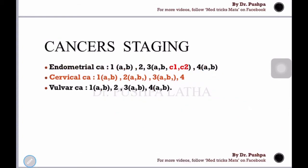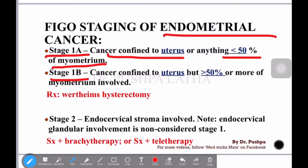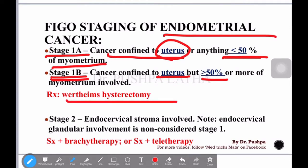Here is the figure for staging of endometrial cancer. Let's read it once. Stage 1 is about cancer confined to the uterus. Stage 1a is tumor involving less than 50% of the myometrium. Stage 1b is tumor involving more than 50% of the myometrium. The treatment for stage 1b is Wertheim's hysterectomy.